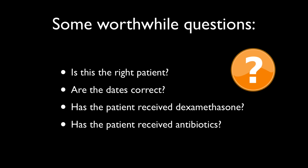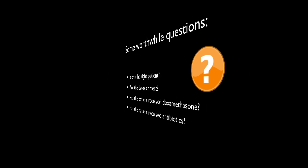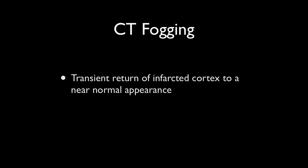Once you've satisfied yourself that these are not viable options, then the diagnosis is that of CT fogging, which represents a transient return of infarcted brain to a near-normal appearance on CT. CT fogging is seen in up to 50% of cases if serial scans are obtained. However, typically in the setting of an acute infarct, scans are obtained over the first few days to evaluate for swelling and secondary hemorrhage, and then not again for quite some time, usually missing the time period at which CT fogging occurs.